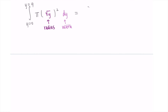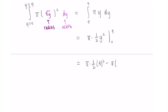Now I just compute the integral. From 0 to 9 of π(√y)² dy — the square root and the square cancel, leaving just π times y. Taking the antiderivative: I add 1 to the exponent and divide by the new exponent, giving π times (1/2)y². Substituting in the bounds: plug in 9 first, then subtract the result at 0. The y = 0 term goes away, leaving π times 81/2. So the answer is 81π/2, which is approximately 127.33.